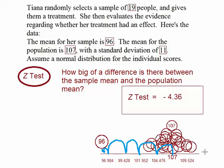If the population mean was 107 and our standard error was 2.524, there is indeed a significant difference between the sample mean and the population mean. At this point, we can pretty much reject the idea that this sample mean is a result of sampling error within this distribution of sample means and is most likely due to the treatment of Tiana's intervention.